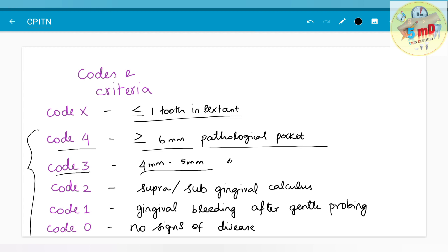Then you can go to Code 2, that is supra or subgingival calculus is present. Then in such conditions, need for scaling along with oral hygiene. When there is Code 1, that is gingival bleeding after gentle probing is present, you give Code 1, then the treatment need 1 goes for that. Improved personal oral hygiene is what is advised to the patient.